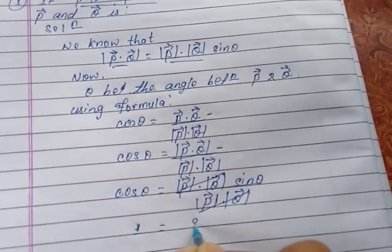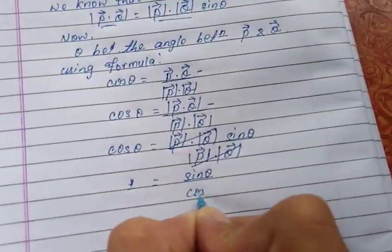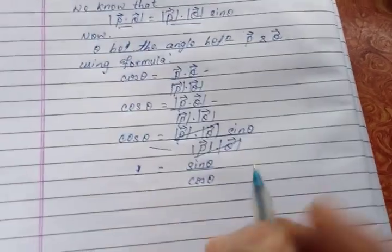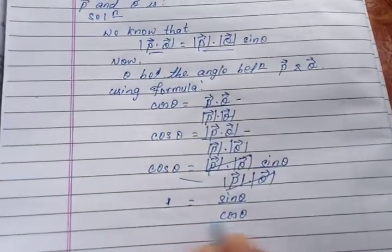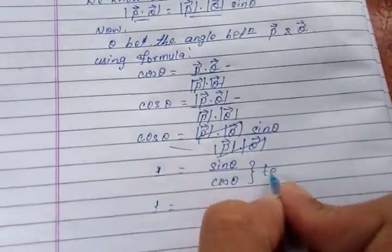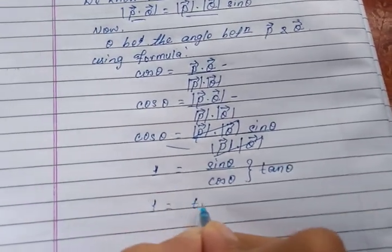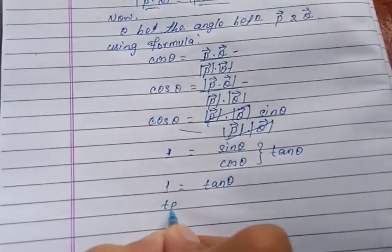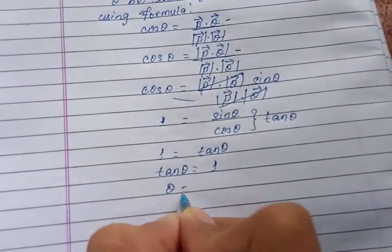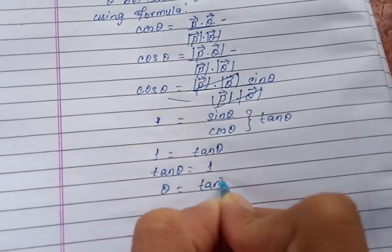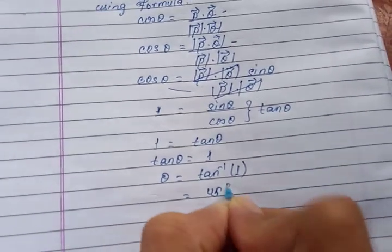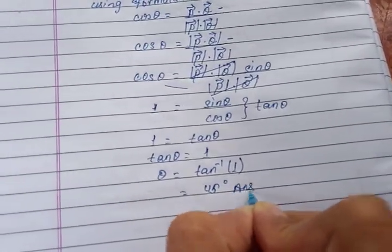After cancellation, we get 1 is equal to sin theta by cos theta. We know that sin theta by cos theta is equal to tan theta. So tan theta is equal to 1. Therefore, theta is equal to tan inverse of 1, which is 45 degrees. This is the answer.